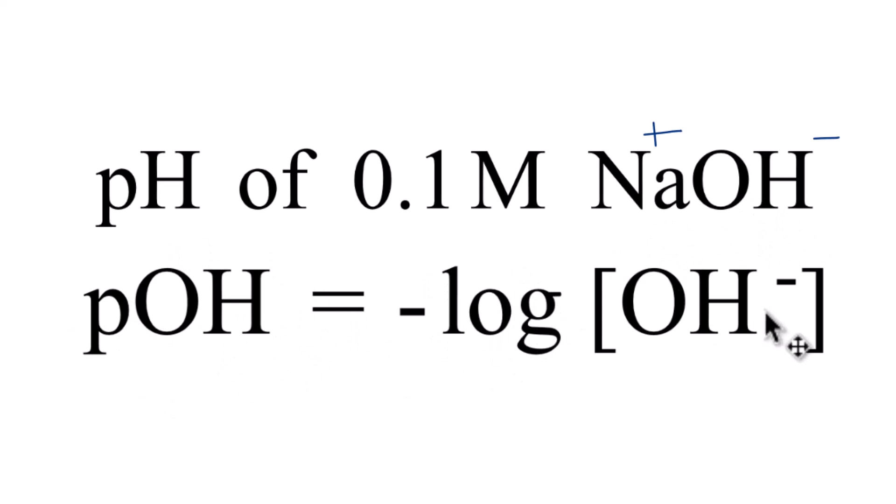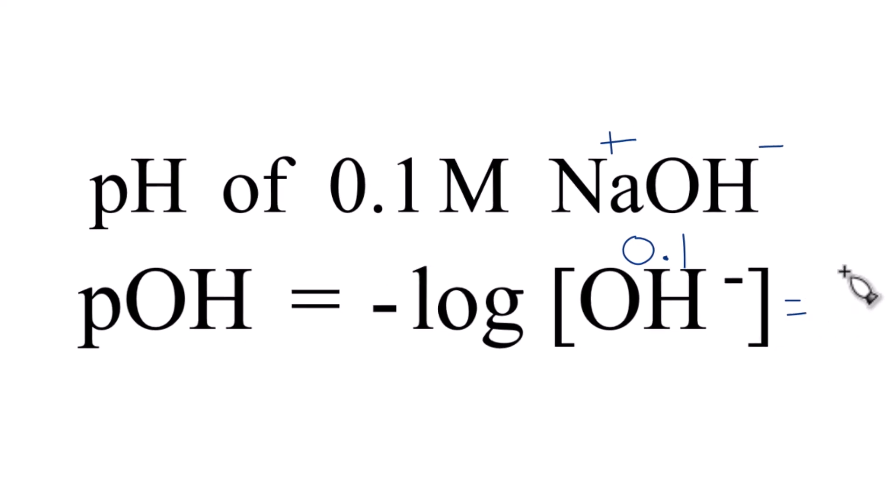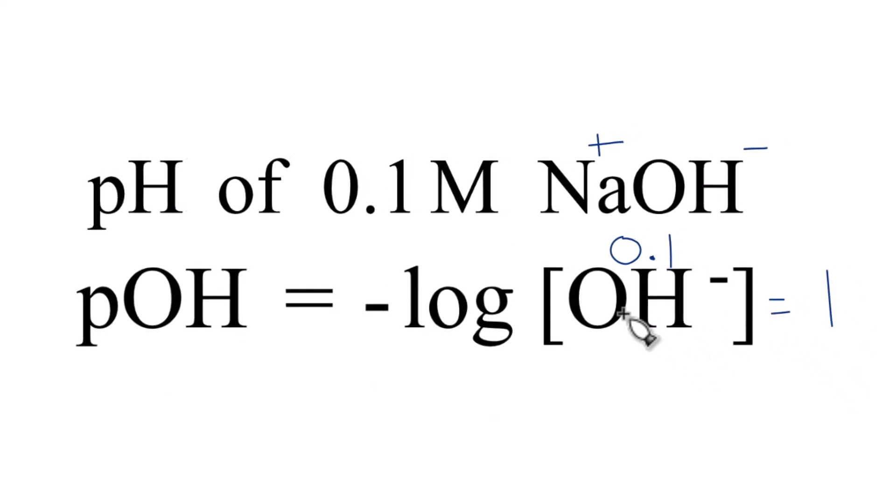So the negative log of the concentration, that's 0.1. That's our molarity. And when we take the log of 0.1, we get negative one. But this negative here will cancel that out. And we just end up with one. So the pOH of this 0.1 molar solution of NaOH is one.